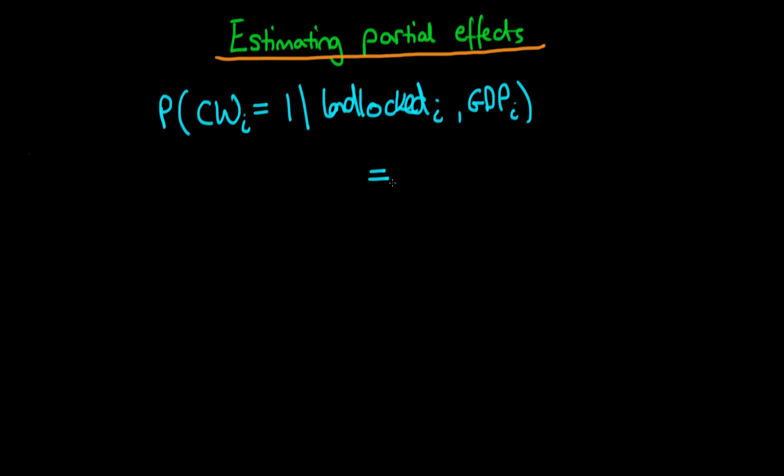And we're going to assume that we're using some sort of non-linear transformation, so this could be a logit, it could be a probit model, of a linear combination of the independent variables. So we have alpha plus beta1 times whether that country was landlocked, plus beta2 times the GDP of that particular country.